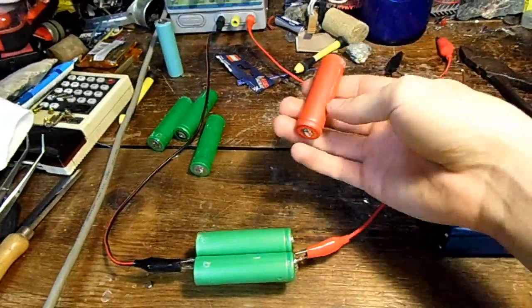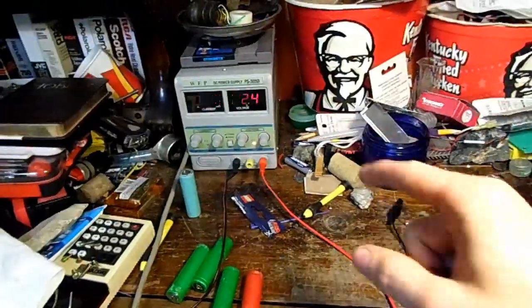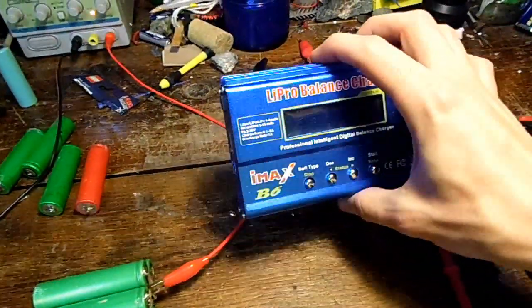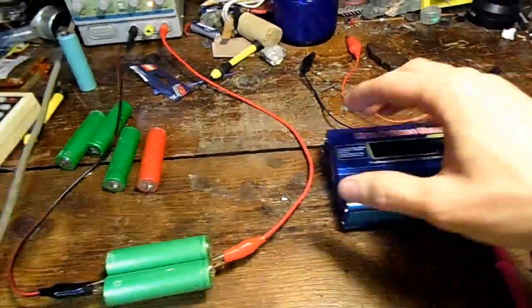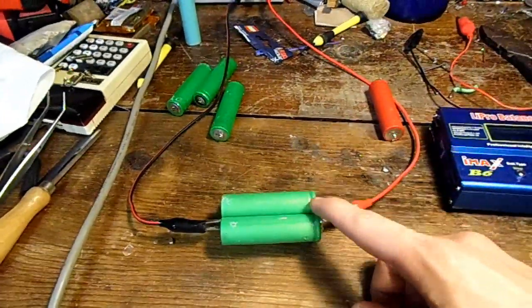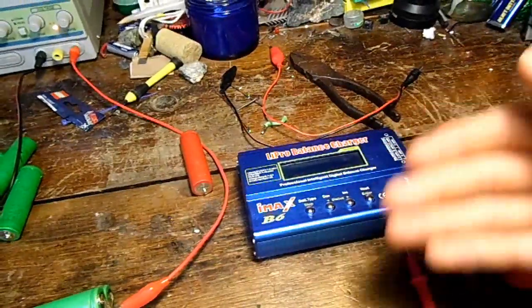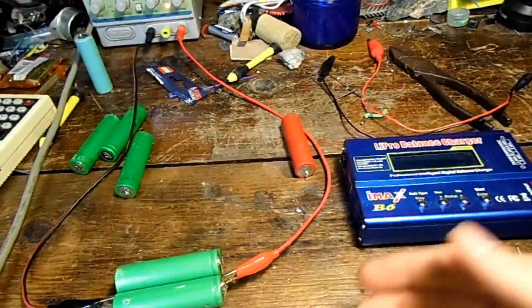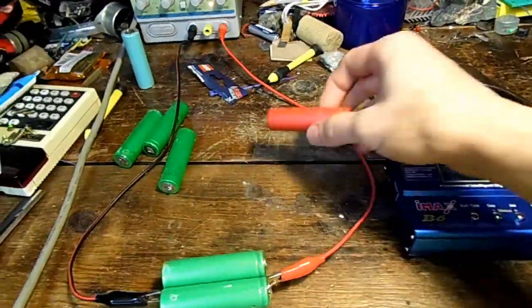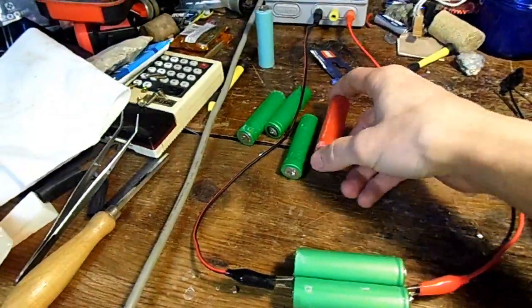So now what I want to do is know for sure how much capacity each cell has. I'm going to get each cell up to 3.5 volts, then charge it with my IMAX B6 balance charger. I'll only charge one cell at a time, or in the case of these, four cells at a time, then divide the result by four. The IMAX B6 will count up how much power it puts into the batteries in milliamp hours, so I can write the capacity on the side of each battery.